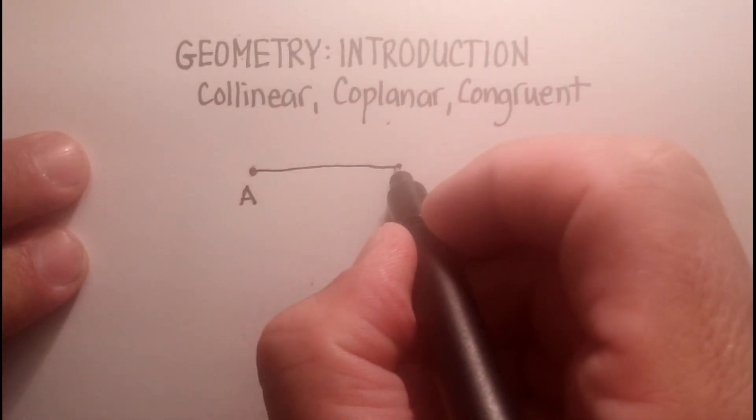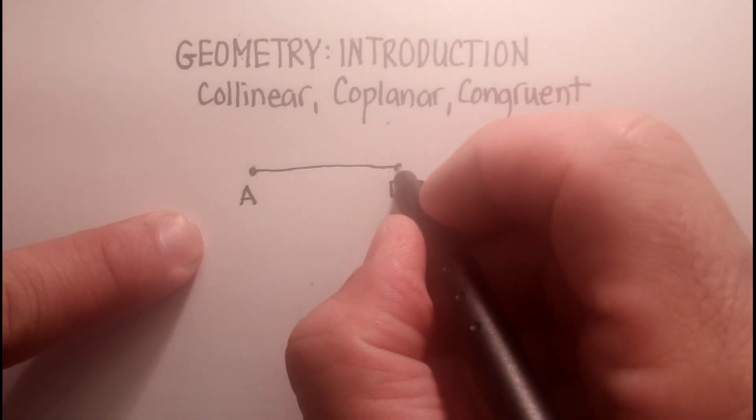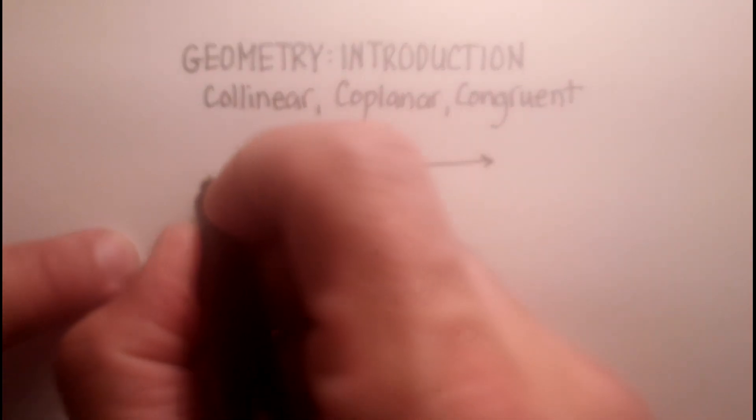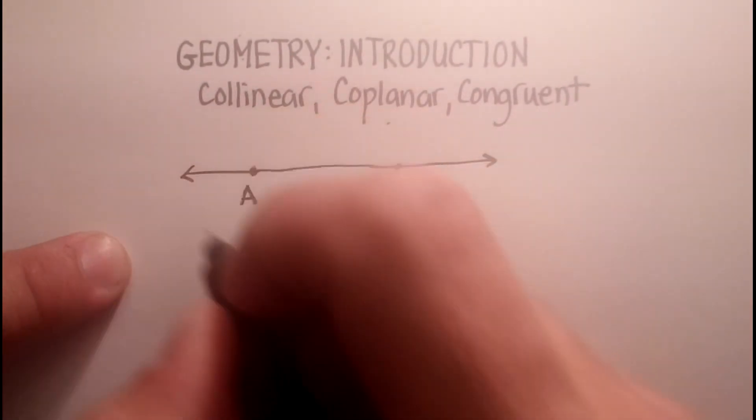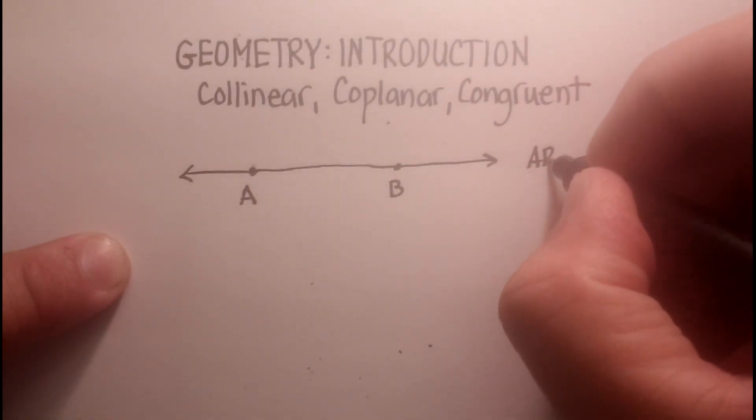Now, when I connect those, remember, that's not a line. That's called a line segment. But to make it a line, I have to extend it towards infinity with little arrows in both directions. So now I have line AB, and that's how I would designate that.